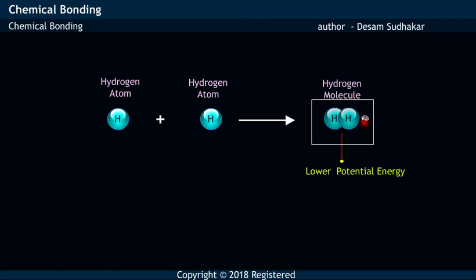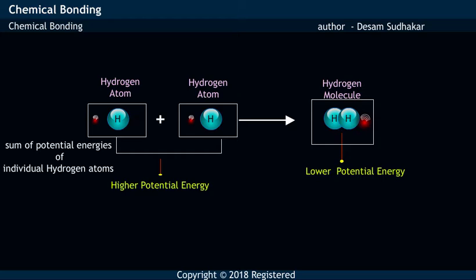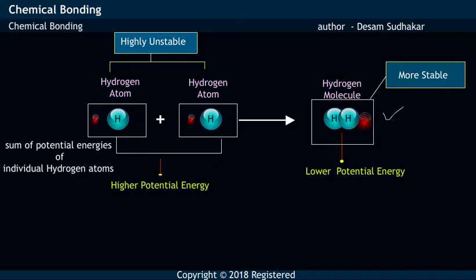The hydrogen molecule formed has lower potential energy compared to the potential energy of individual hydrogen atoms. Hence, hydrogen molecule is more stable when compared to individual hydrogen atoms.